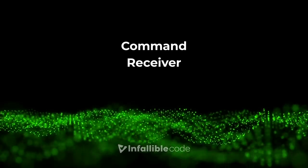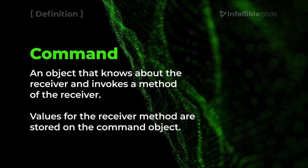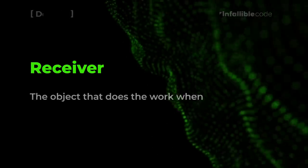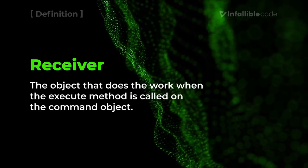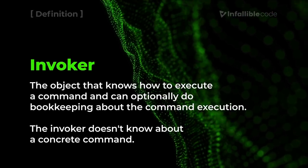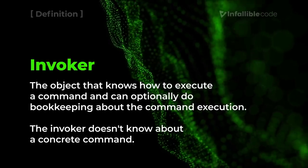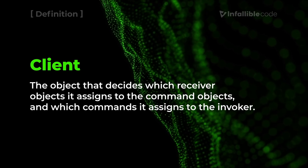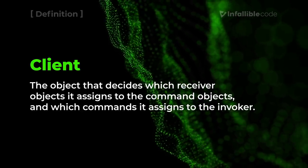The pattern consists of four key elements: Command, Receiver, Invoker, and Client. The Command is an object that knows about the Receiver and invokes a method on it using values stored on itself. The Receiver is the object that does the work when Execute is called on the Command. In our case, ActionBase is the Command and the Unit is the Receiver. The Invoker knows how to execute a command and can optionally do bookkeeping about command execution — in our case, ActionRecorder is the Invoker and it bookkeeps by maintaining a stack of previously executed actions. Finally, the Client decides which Receiver is assigned to the command objects and which commands are assigned to the Invoker — in our example, the TurnController is the Client.